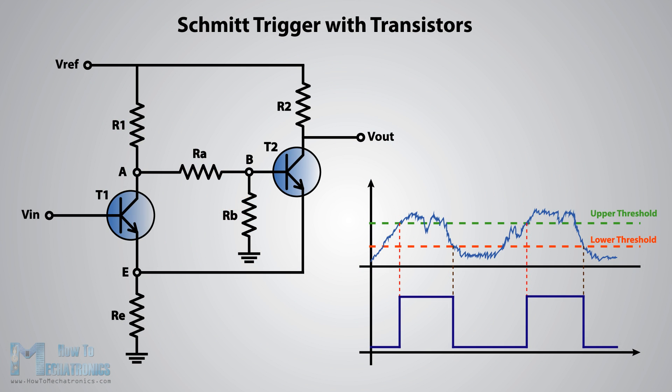In the previous tutorial we explained what is Schmidt trigger and how it works using operational amplifiers. Now in this tutorial we will explain the transistor based Schmidt trigger. The circuit contains two transistors and six resistors.